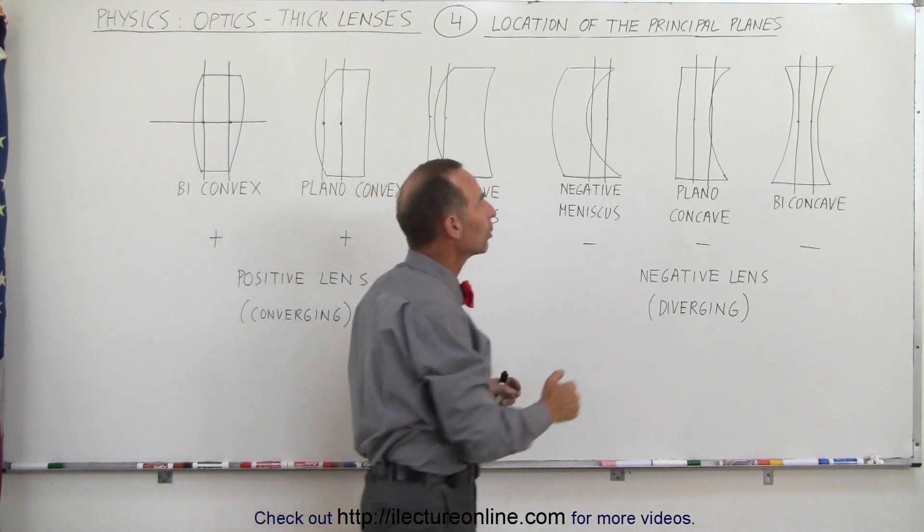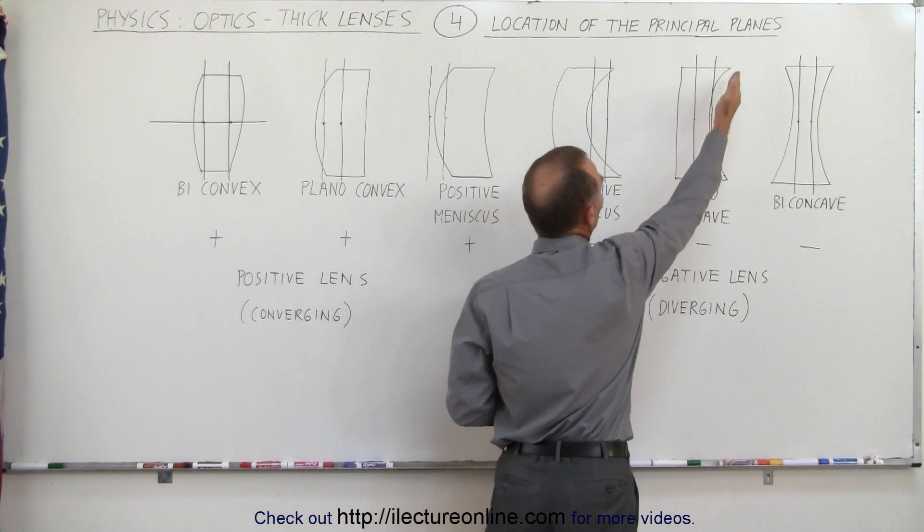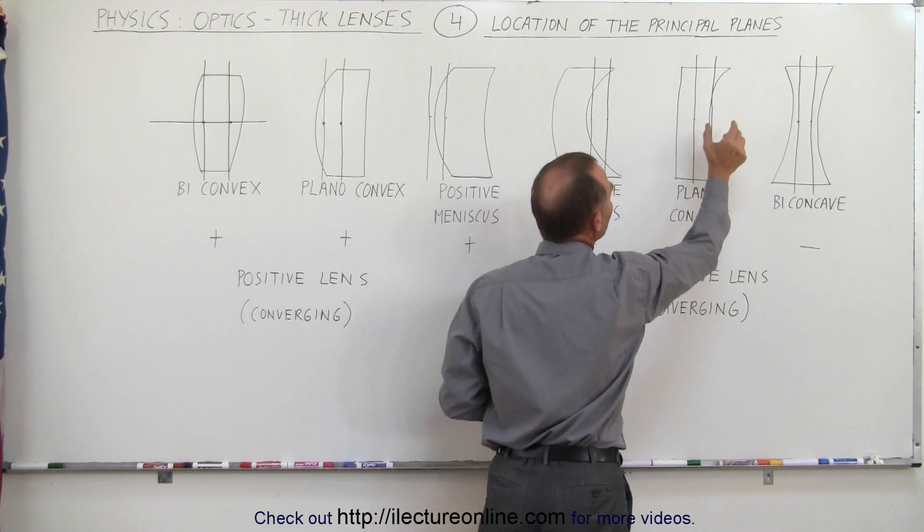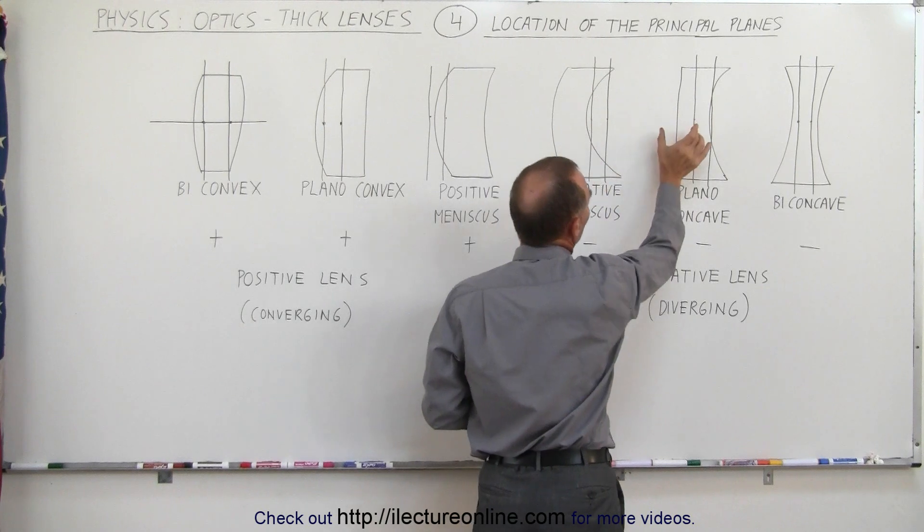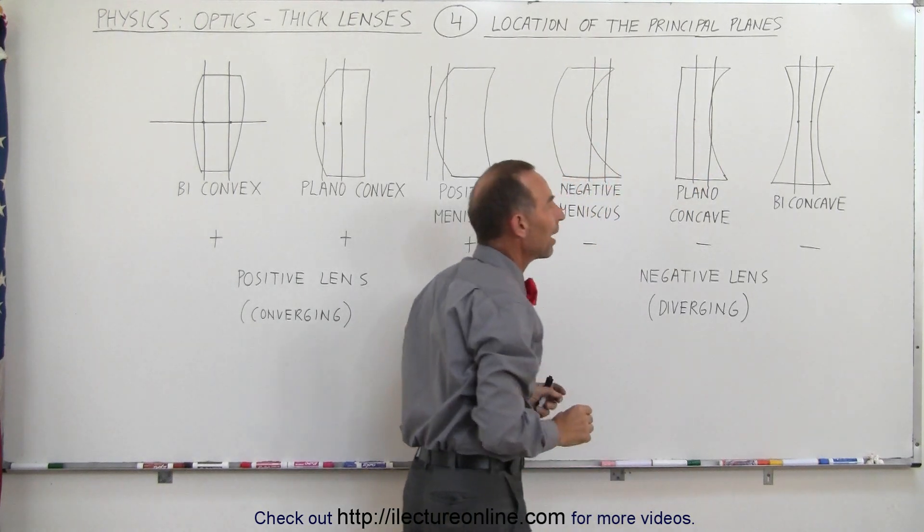On the plano concave lens, since one side is straight and the other side is concave, they won't be quite as far out. If both sides are curved, the principal planes will move farther out.